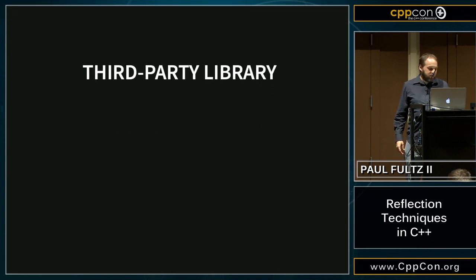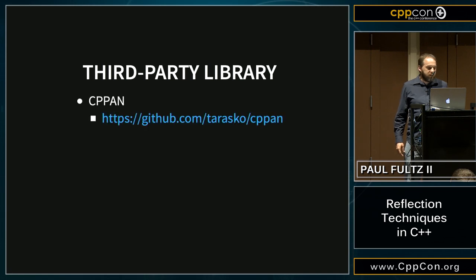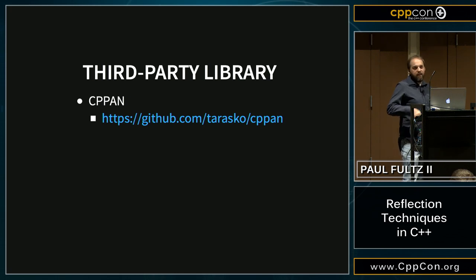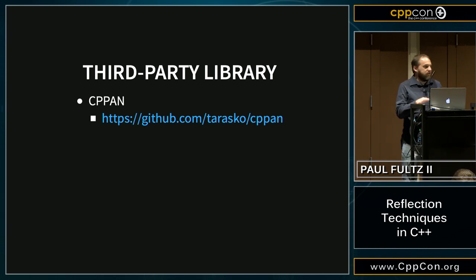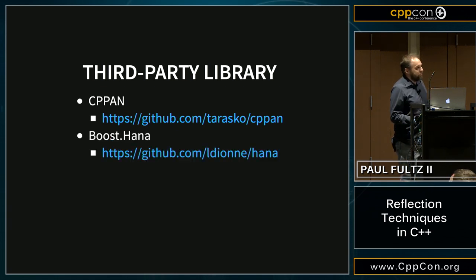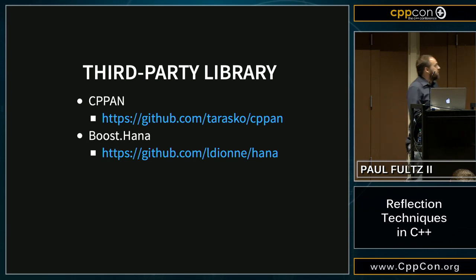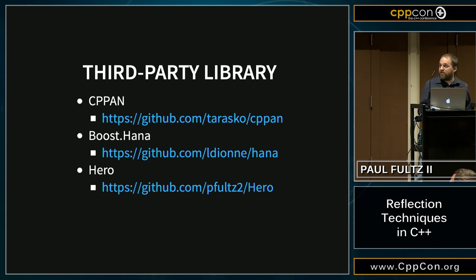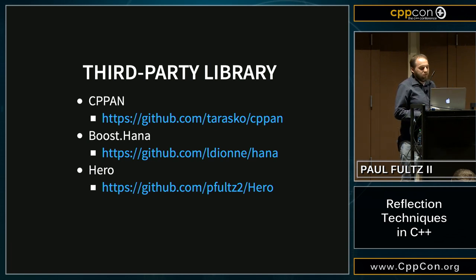Some third-party libraries to go along with Boost Fusion: first, cppn, which builds on top of Boost Fusion and provides a whole annotation system, doing the annotations we've been doing manually. Another library is Boost.Hana, a modern replacement for Boost Fusion. If you're using the latest version of Clang or GCC, you can use Boost.Hana instead — it gives cleaner interfaces and much faster compilation. There's also a library called Hero that I've started working on for portability reasons, as a modern replacement for Boost Fusion.